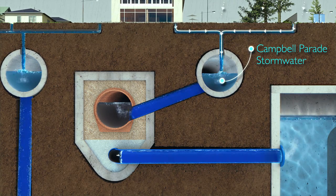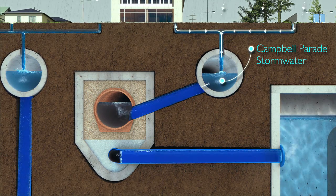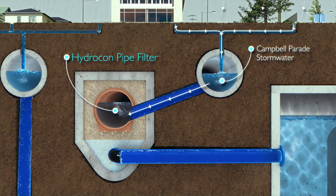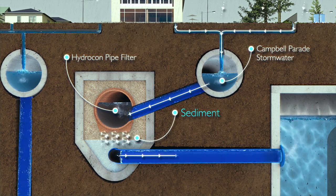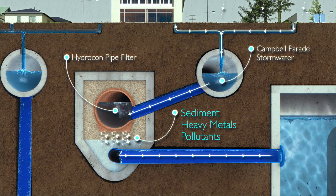Stormwater runoff from Campbell Parade, which can be highly polluted, is directed into a separate porous pipeline which is designed to remove sediment, heavy metals and other stormwater pollutants.